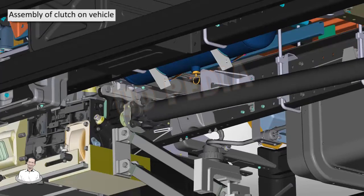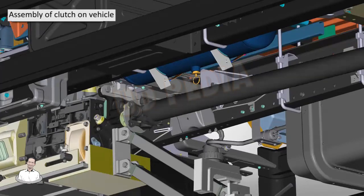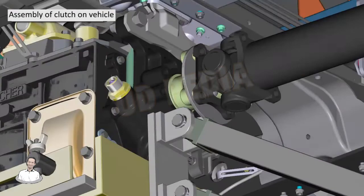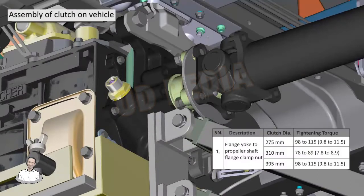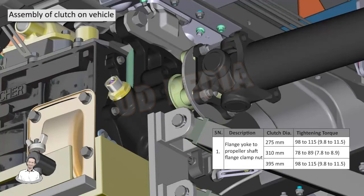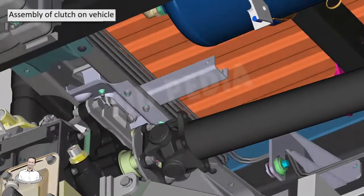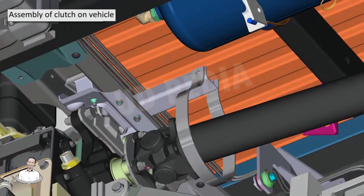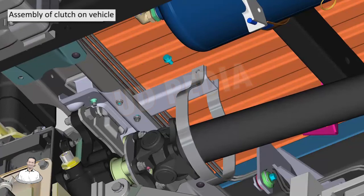Position and connect the propeller shaft to the transmission. Position and connect the supporting bracket of the propeller shaft.